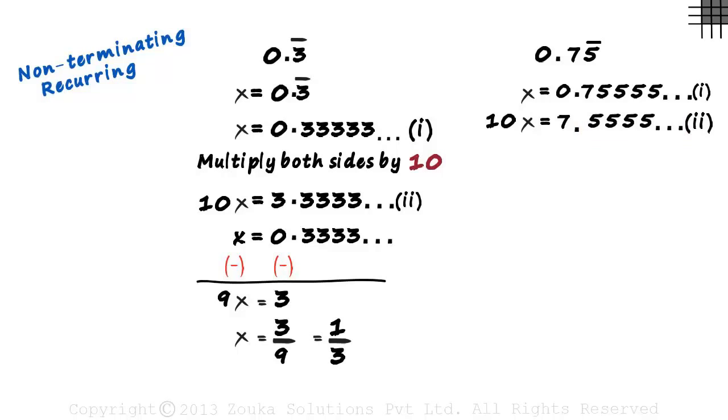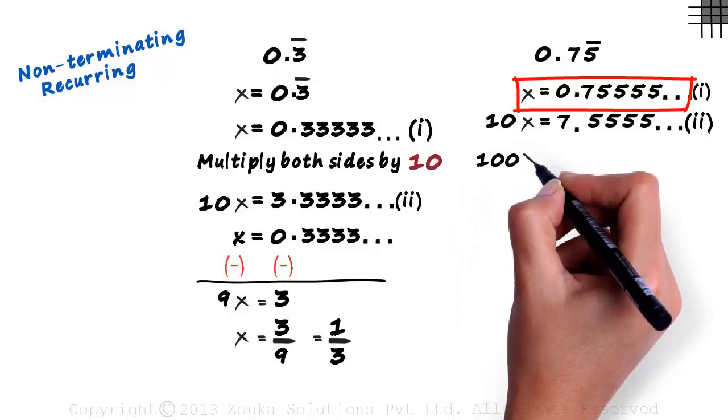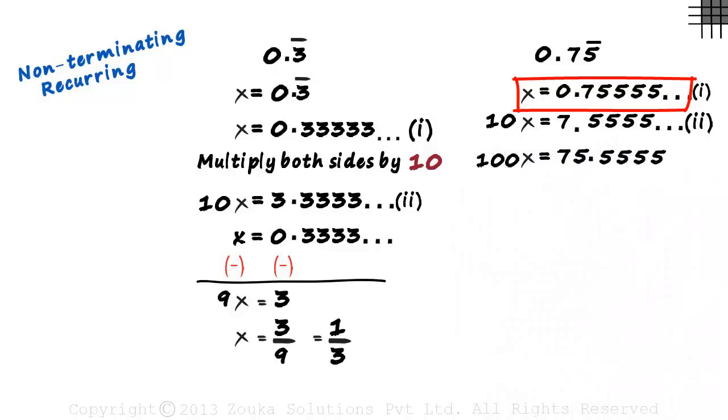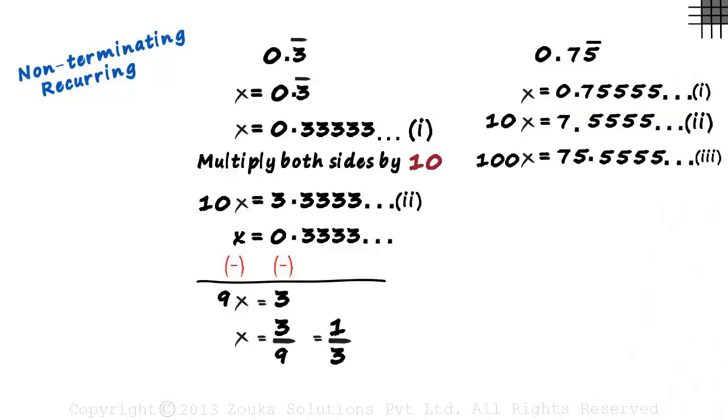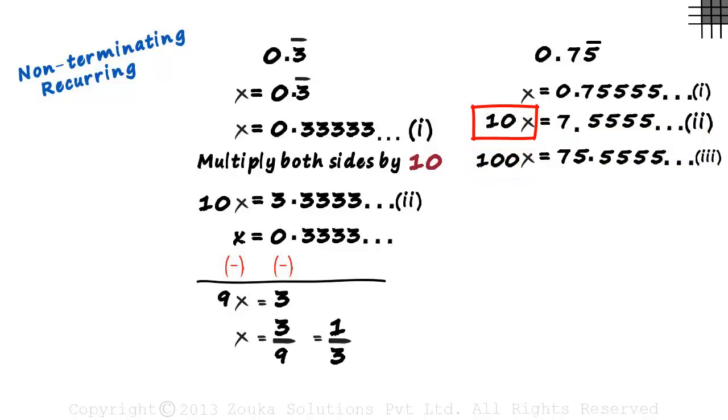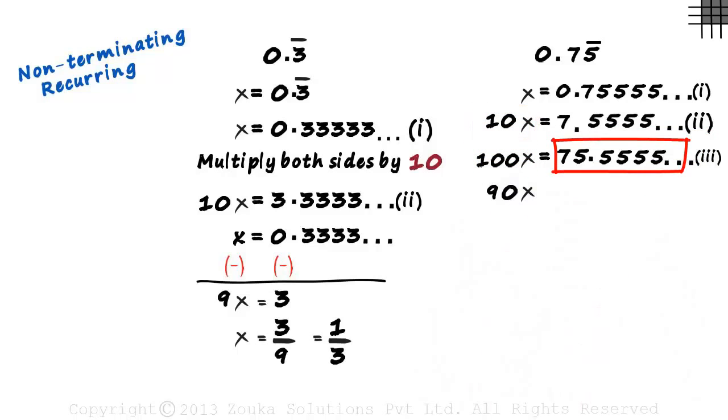It's simple. We multiply equation 1 with 100. That gives us 100x equals 75.5555 and so on. So now we have two equations which have just 55555 after the decimal point. Let's subtract this equation from this one. 100x minus 10x equals 90x on the left hand side and this minus this will equal 68. We can see that getting the part after the decimal same allows us to just subtract it out. So this actually equaled 75 minus 7.